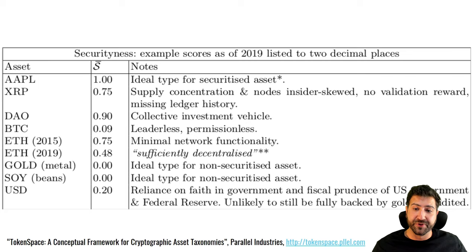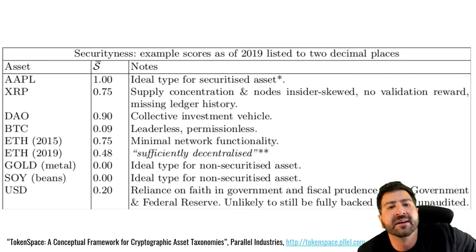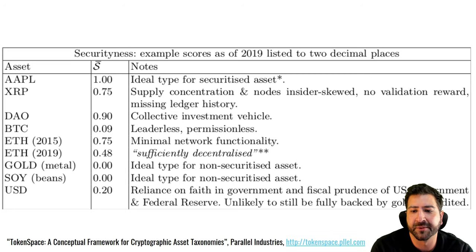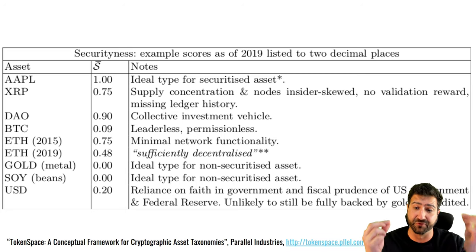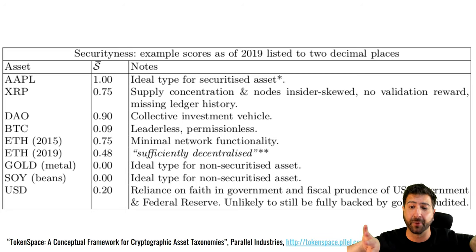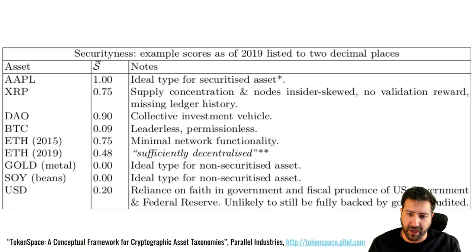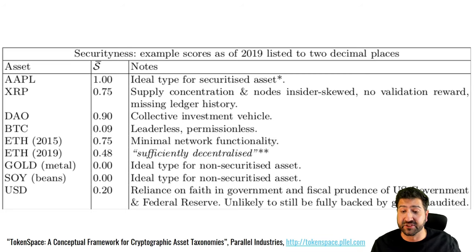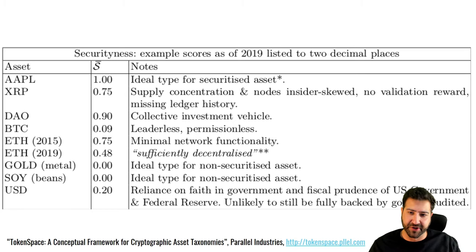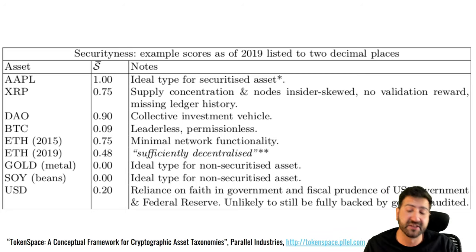Here's a table with some sample scores based on taxonomy outputs. I've put in some non-cryptocurrencies to give a sense of ideal or extreme types — to benchmark the ends of the scale. For securitiness, Apple stock scores one: it's a security, it does what it says on the tin. At the other extreme, a lump of rock or some soybeans is definitely not a security — none of the legs of the Howey test or Silver Hills collective capital risked apply. Everything else falls in between.